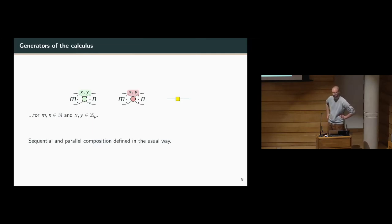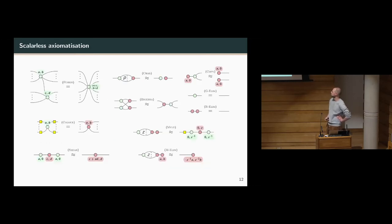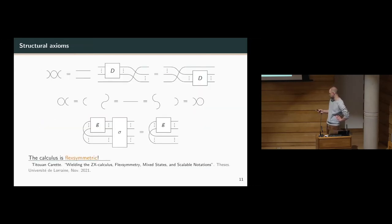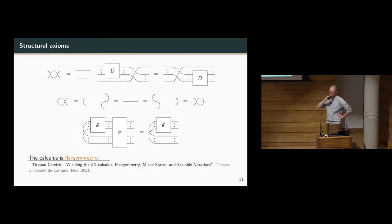Question: if you fix the field to be R, can you interpret this as Gaussian stabilizer theory? Answer: You can do some of it. The problem is that cups and caps are always problematic in the infinite-dimensional setting. You can still get the affine coisotropic relation part, but neither this calculus nor the category of affine relations has an interpretation in Hilbert space because of the lack of caps or lack of compactness. Whether a non-standard analysis interpretation is possible is unclear — it would be a lot more complicated.